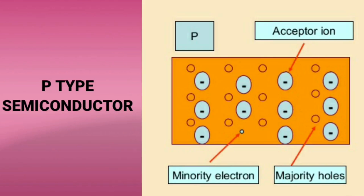In the P-type semiconductor diagram, major carriers are holes and minor carriers are electrons. This is because we add a trivalent impurity, which accepts electrons in the semiconductor. We create holes in the P-type semiconductor. So, major carriers are holes and minor carriers are electrons.